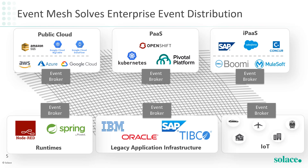There are three defining characteristics of an event mesh. First, it's made up of interconnected event brokers, which means it's inherently event-driven. Second, it's environmentally agnostic — it can be deployed in any public cloud, private cloud, PaaS, or non-cloud environment, and it'll operate the same way in all environments. Third, it's dynamic. It dynamically learns which events should be routed to which consumer applications, and then routes those events in real-time as they occur, no matter where the producers and consumers are attached to the mesh, and without needing to configure event routing. The event mesh takes care of this, rather than the developer having to set everything up each time.